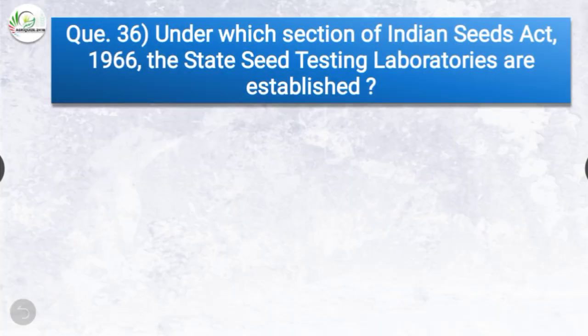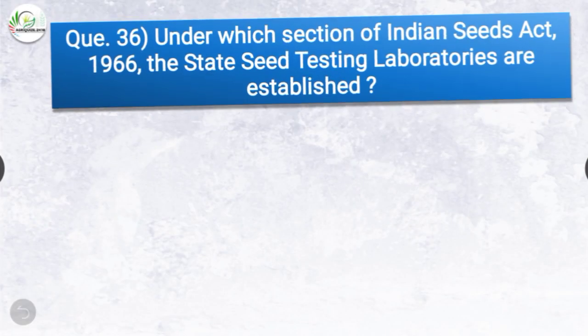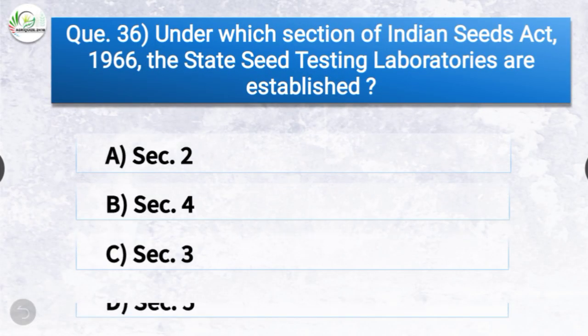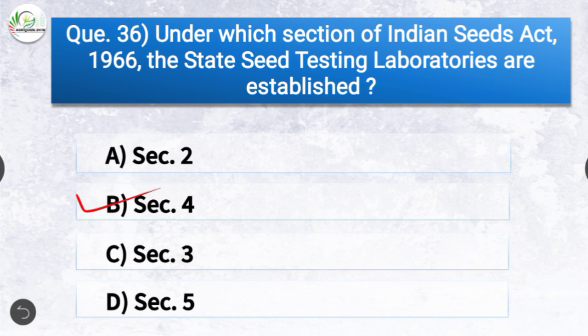Question number thirty-six: Under which section of Indian Seeds Act 1966 are state seed testing laboratories established? The options are section 2, section 4, section 3, or section 5. The correct answer is option B — section 4. Under section 4 of Indian Seeds Act 1966, the state seed testing laboratories are established.